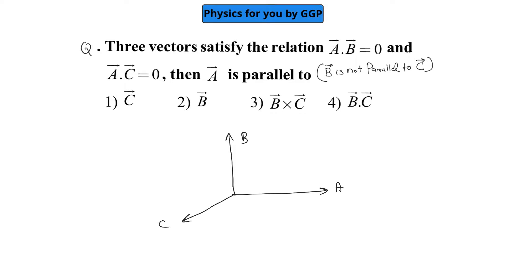So we can say that if you are going for this b vector cross c vector, then that will be along the direction of a vector. So we can say that a vector is parallel to b vector cross c vector.